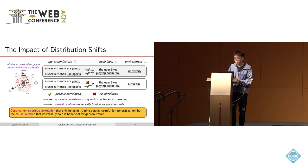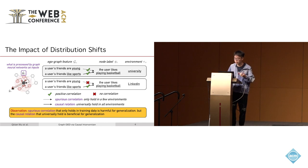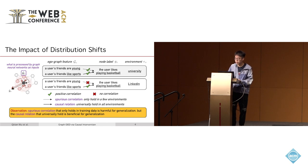If the social network is collected from a university, both features have positive correlations with the user's label. But if the network transfers from a university to LinkedIn, the first feature — friends being young — has no correlation with the node label, because on LinkedIn, user age and interest have a uniform distribution. The correlation of the first feature is thus spurious.